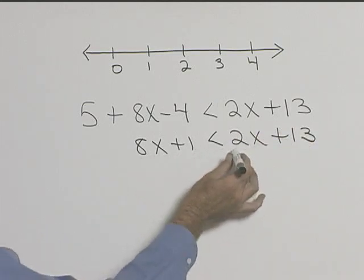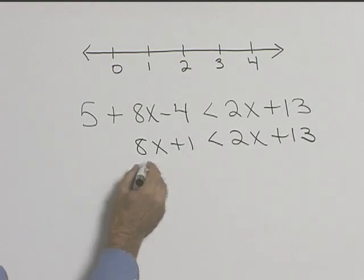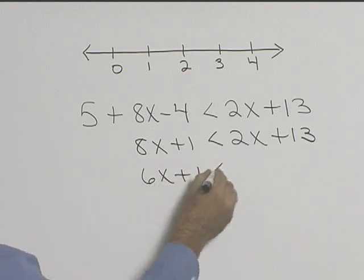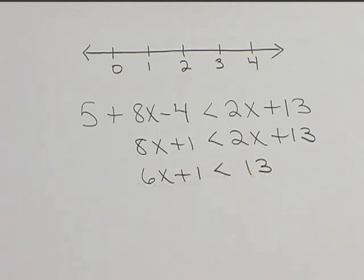Now let's get our x's to the left-hand side. If we subtract 2x from both sides, 2x from 8x will give us 6x plus 1 is less than 13.